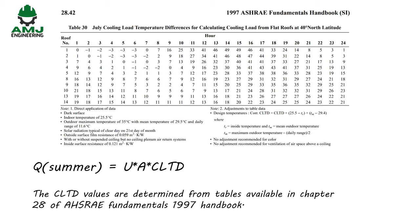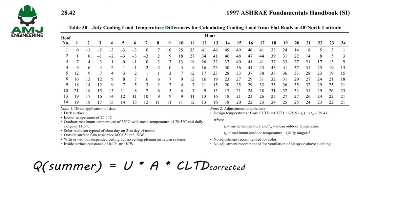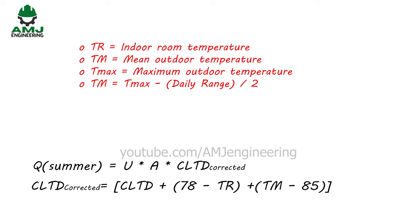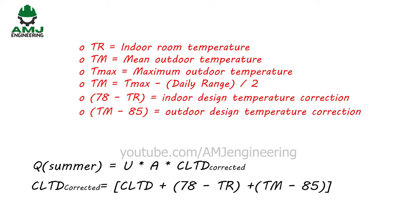CLTD values are determined from tables in Chapter 28 of the 1997 ASHRAE Fundamentals Handbook. Since ASHRAE tables provide hourly CLTD values for standard conditions — indoor temperature 78°F and outdoor mean temperature 85°F — a correction is required for other conditions. The corrected formula is Q = U × Area × CLTD_corrected, where CLTD_corrected = CLTD + (78 − TR) + (TM − 85), with TM = maximum outdoor temperature minus daily range divided by 2.